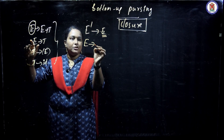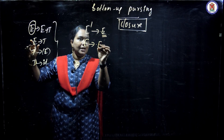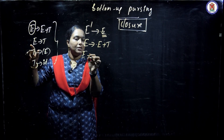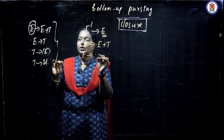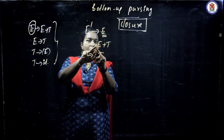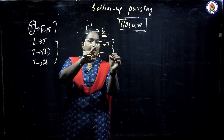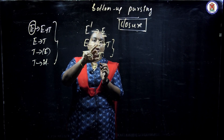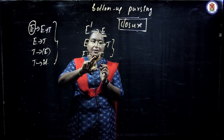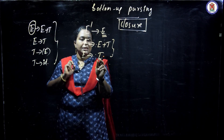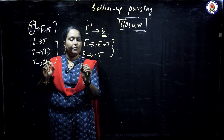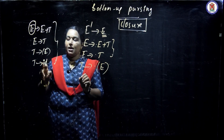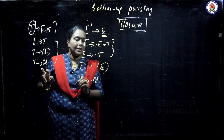From E we write: E gives dot E plus T, and E gives dot T. Next, look at the dot in these two grammars. The dot before E has already been explored. Next, dot before T: T has not been explored. So we look for T's productions: T gives dot (E) and T gives dot ID.